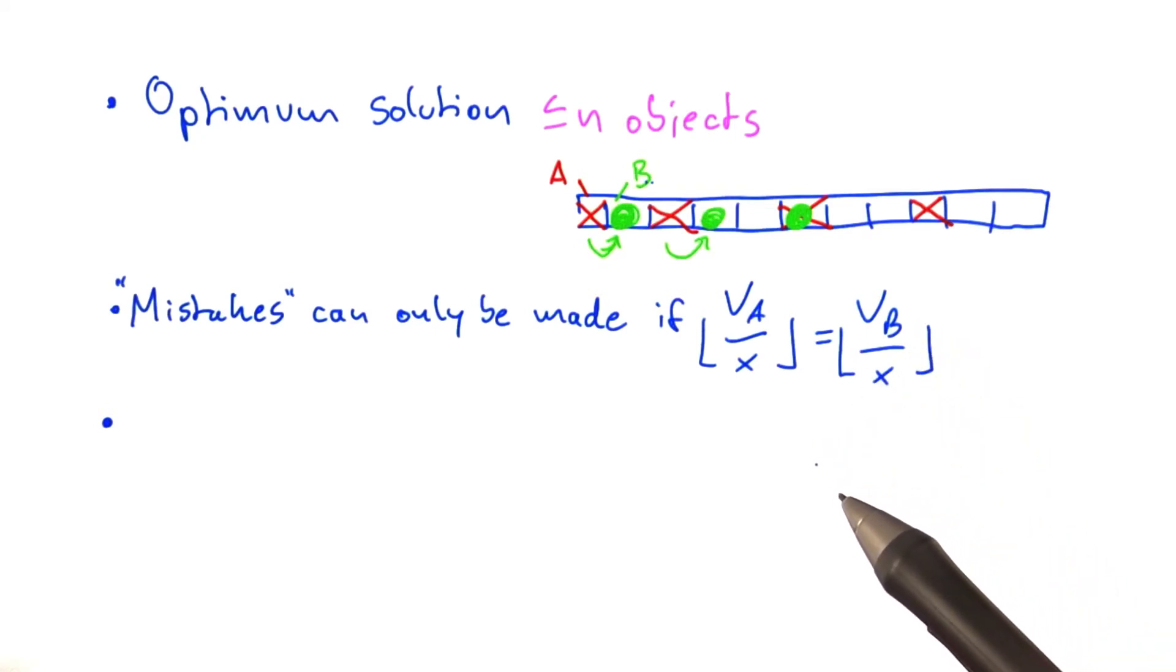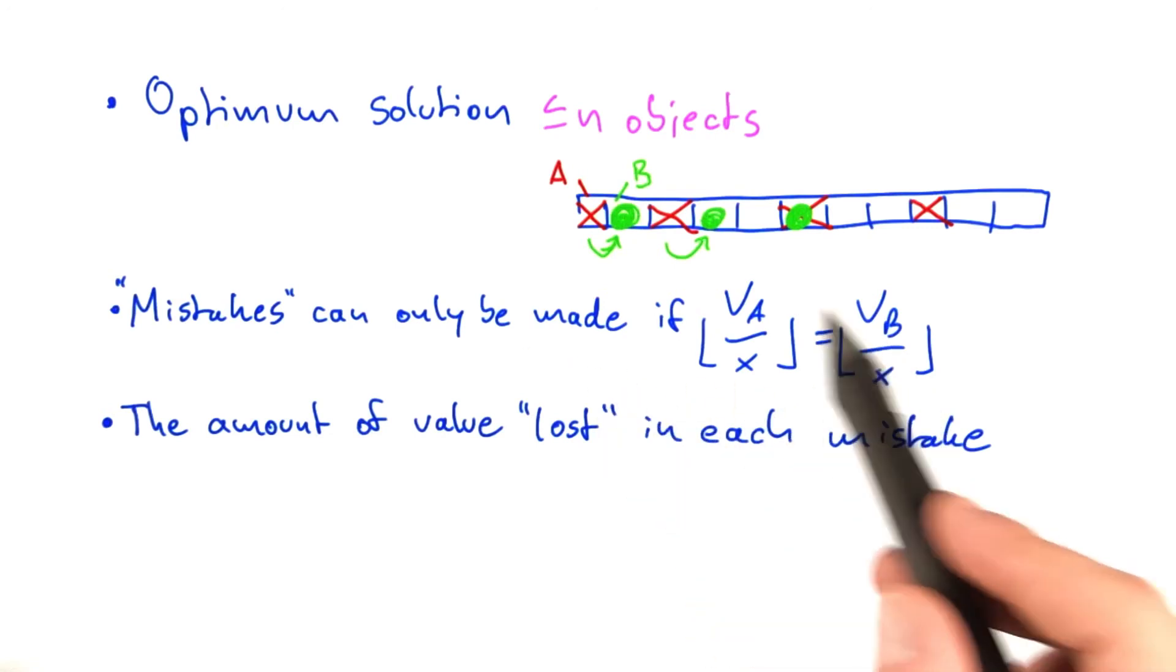But that actually allows us to quantify a mistake. So mistakes can only be made if this condition here is fulfilled.